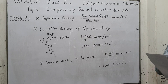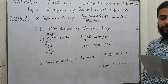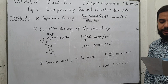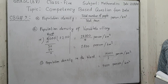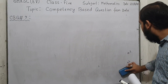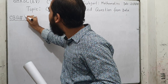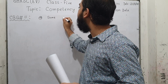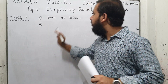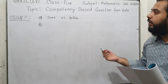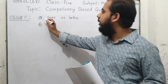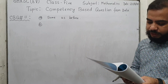Question number 11: The population of Shohagpur village is 3,000 in an area of 5 square kilometers. Part A asks: what is the population density of the village? Part B asks: what will the population density be after 10 years if the population increases by 2,000? Question 11A is the same as the previous problems, so we will solve only Part B.